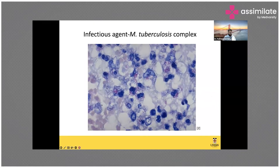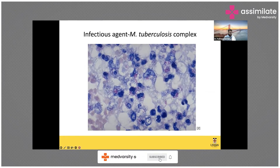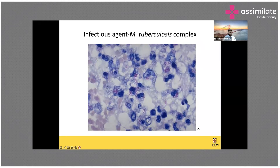There are multiple infectious agents for tuberculosis, and the most important is Mycobacterium tuberculosis, which causes pulmonary tuberculosis and extra-pulmonary tuberculosis. They are usually acid-fast bacilli and are visible using the modified Ziehl-Neelsen technique, appearing as pink rods.